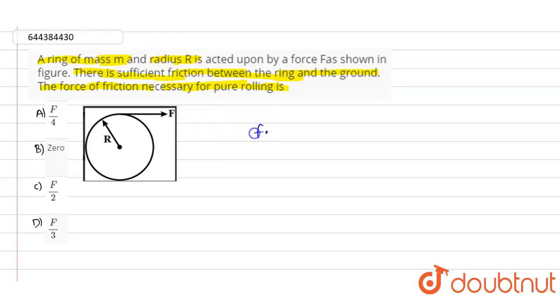We need to find out the value of the force of friction, that means fk value, which is necessary for pure rolling. As said in this question, there is friction between ring and the surface. Let us suppose this as the surface, and capital R is the radius of the ring. This is the direction of the force and this is the direction of the acceleration.